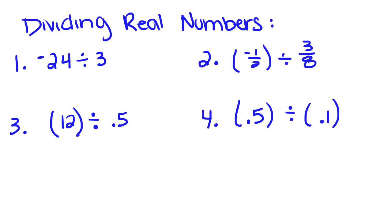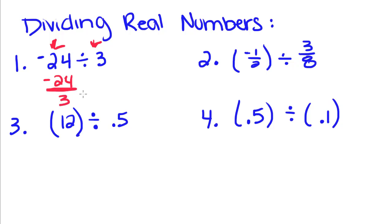Now we're going to do some practice. When we divide real numbers, we write it as a fraction. We have negative 24 as the dividend and 3 as the divisor, so we write negative 24 over 3 and reduce. Three goes into negative 24 eight times, so we get negative 8 as our answer.